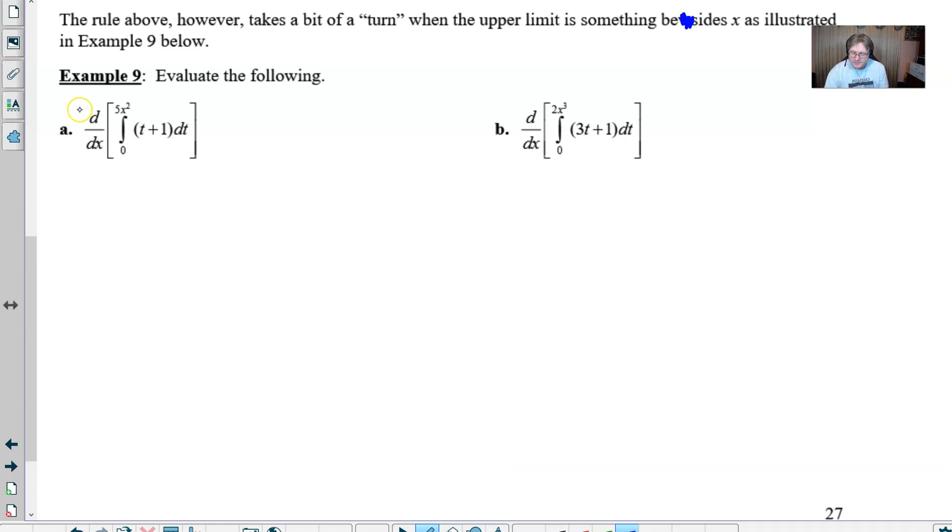The rule above takes a different turn when the upper limit is something besides x, as illustrated in example 9 here below. Evaluate the following. So evaluate the derivative with respect to x of this expression. Okay, well maybe we replace the t with x. Maybe that's all we do. Okay, well let's try that. If I replace the t with the entire upper boundary, well maybe this is what my answer is going to be. But I tell you what, there's one surefire way to find out. And let's go with the long way here.